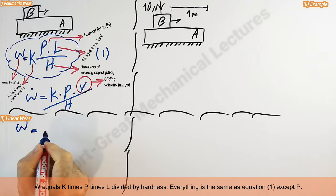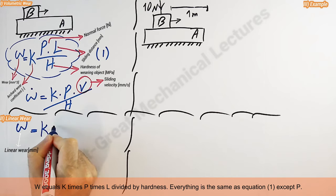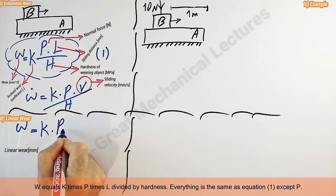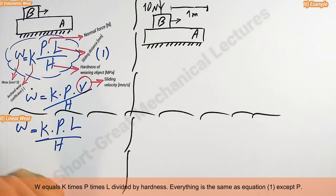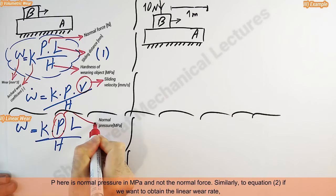W equals K times P times L divided by H, which is hardness. Everything is the same as equation 1 except P. P here is normal pressure in megapascal and not the normal force.